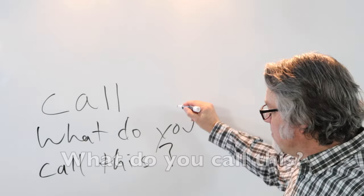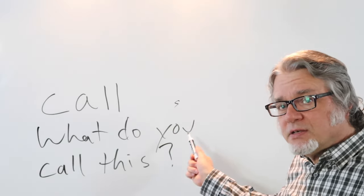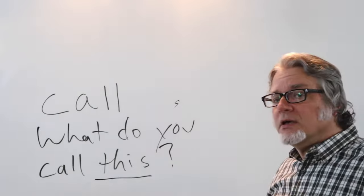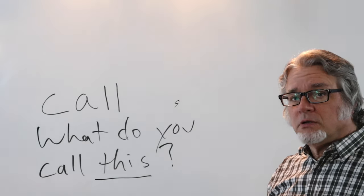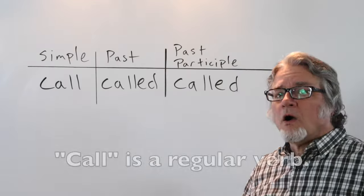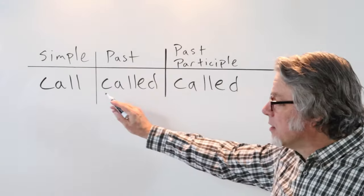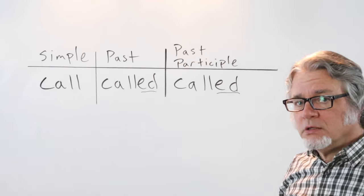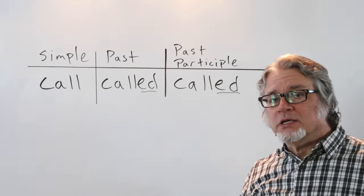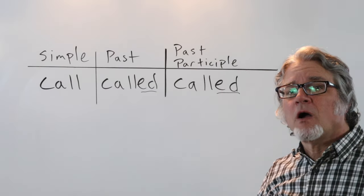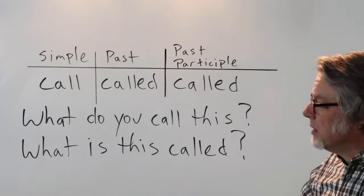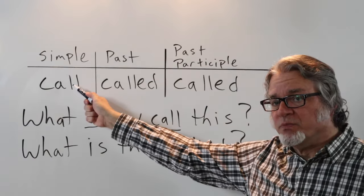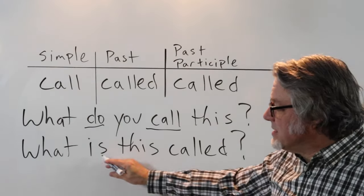The 'you' in this question is the subject — it is the indefinite 'you,' meaning any person who knows the name of this can provide the information. 'What do you call this?' — 'Call' is a regular verb: call, called, called. Don't pronounce the 'e'; don't say 'call-ed' — it's just one syllable: 'called.' 'What do you call this?' is in the present tense, with a helping verb and then the main verb in the simple form.